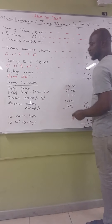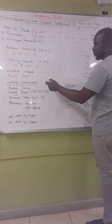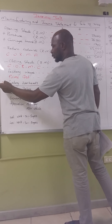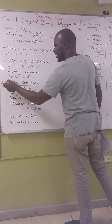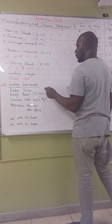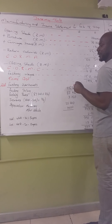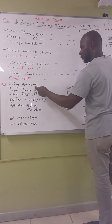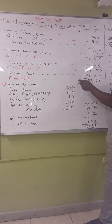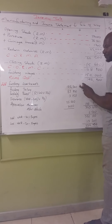Next we move to factory overheads, also known as indirect costs. We add our factory overheads. First we have factory salary: 25,200 — this is the indirect portion.